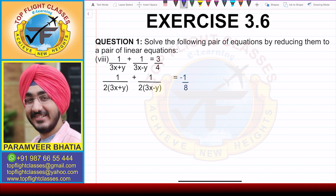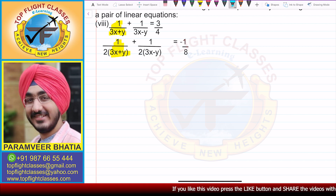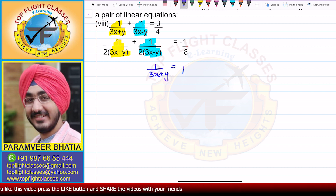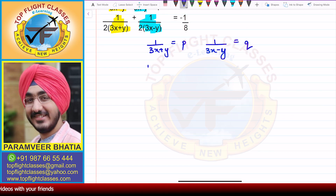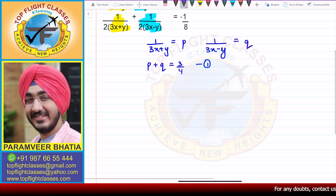We can clearly see that the two repeating factors are 1 by (3x + y) and 1 by (3x − y) in both equations. So we substitute: let p equal 1 by (3x + y) and q equal 1 by (3x − y). From the first equation we get p plus q is equal to 3 by 4.